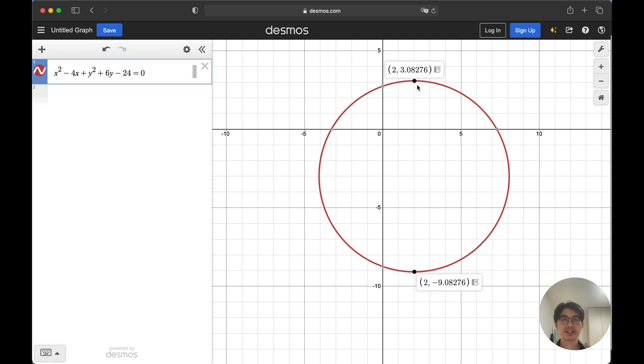If we connect these two points, that will be the diameter of the circle, right? So the radius will be half the length of this diameter. So how to find the length of the diameter?